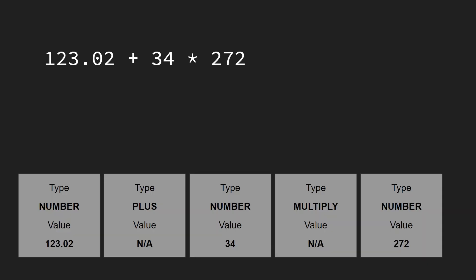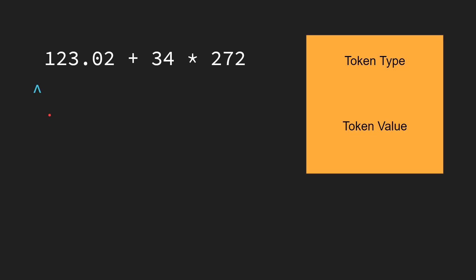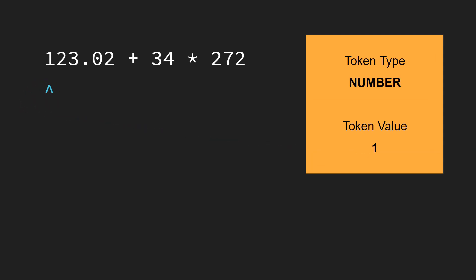The Lexer groups input characters into small segments called tokens and figures out the type of each token. The Lexer goes through the input character by character. The first character is a digit, so the Lexer figures out that this is the start of a number. It keeps track of the token type and the current built-up value, then advances to the next character — still a digit — so we continue to build up the number.